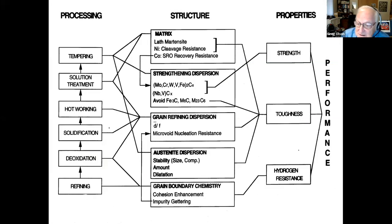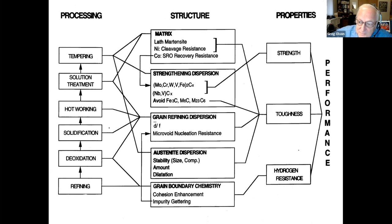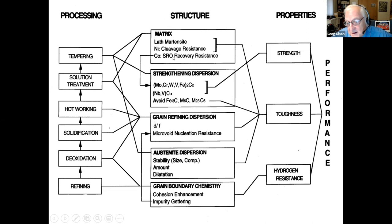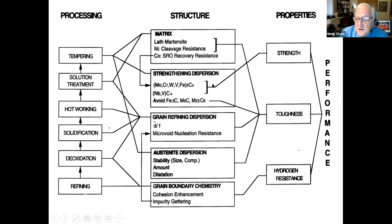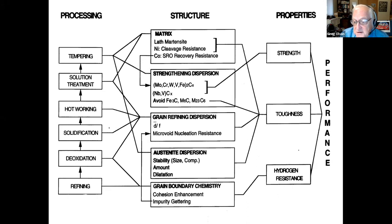The approach we take builds on a systems approach to materials. Rather than reinventing systems engineering, we take the well-established framework from all other branches of engineering. Each project starts with a system chart where we map ultimate performance goals back to quantitative property objectives controlled by microstructural subsystems that each dynamically evolve throughout the stages of materials processing. With this we can identify and prioritize the structure-property and process-structure relations for which we want to build predictive models, posing those relationships in terms of fundamental parameters accessible from the CALPHAD databases.